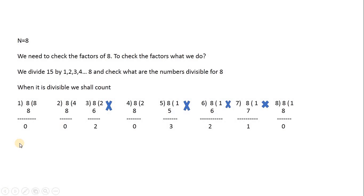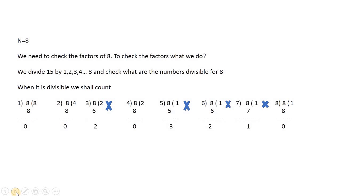To check whether a number is prime or not, we check if the remainder is 0. For n=8, when we divide 8 by 1, 2, 3, 4, and so on up to 8, the remainder is 0 for 1, 2, 4, and 8. Those are all factors of 8 — 4 factors total — which is why 8 is not a prime number.